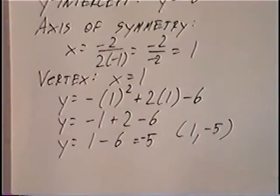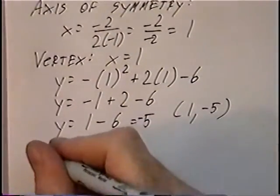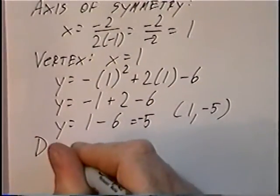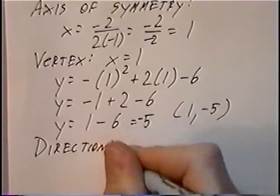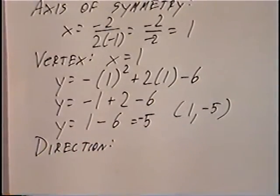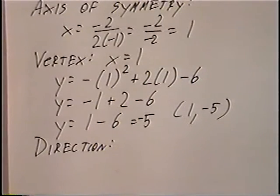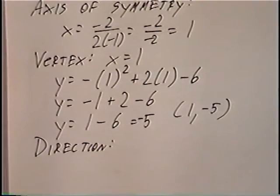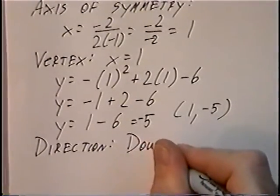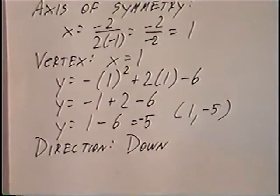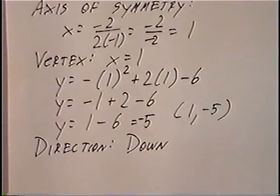The last part before graphing is the direction, which is up or down based on the value of a — the number in front of x squared. Looking at the original equation, negative x squared means a is -1. Since a is negative, this parabola opens down.